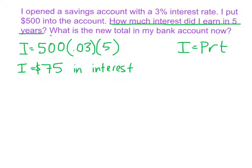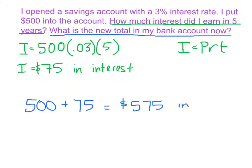Now our next question is asking, what is the new total in my bank account? And our new total is going to be our principal that we invested, how much we started with, plus the interest that we've earned so far. So $500 plus $75 gives us a grand total of $575 in the bank account. And there we go.